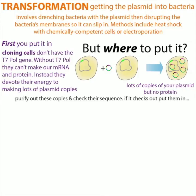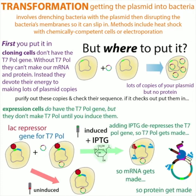During the cloning step, we use cells that typically don't even have the T7 polymerase gene, so we don't have to worry about T7 polymerase getting made at all. We can just focus on getting lots of the plasmid so we can check that the sequence is correct. When we know we have the right plasmid, we stick it into a different type of cells — expression cells like BL21. These cells have the T7 polymerase gene under the lac repressor system.